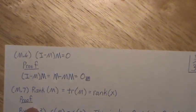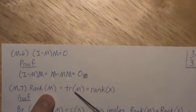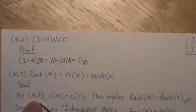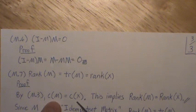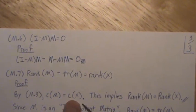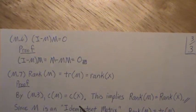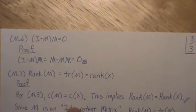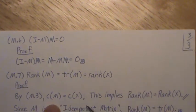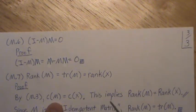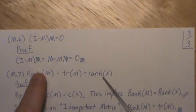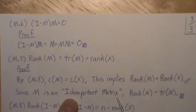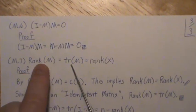Property 7: the rank of M equals the trace of M, which equals the rank of X. The trace means adding up the diagonal elements. By property M3, the column space of M equals the column space of X, so spanning the columns of each gives the same vector space — meaning the rank of M equals the rank of X. Since M is idempotent, rank equals trace, completing the proof.